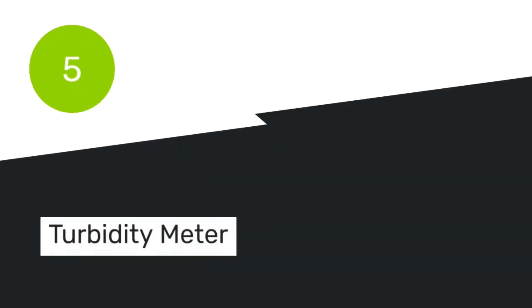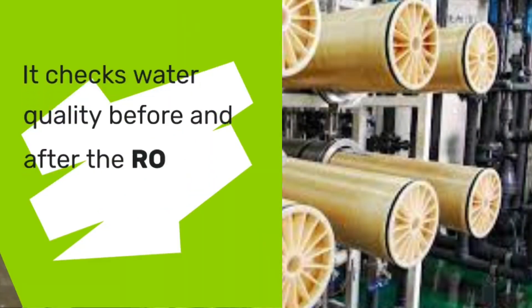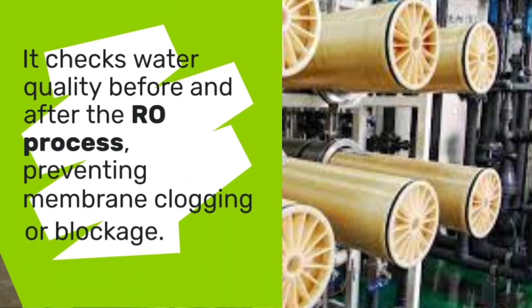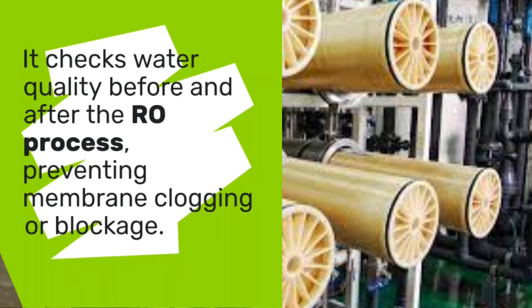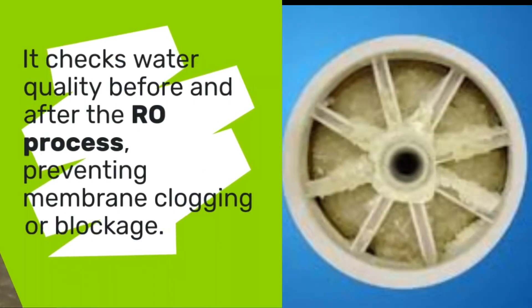Number 5: Turbidity Meter. A turbidity meter measures how cloudy or clear a solution is by shining a light through it and detecting how much light is scattered by the particles in it. It is used to check the quality and clarity of the water before and after the RO process. It also helps to prevent the membrane from getting clogged or blocked by too much dirt or debris.